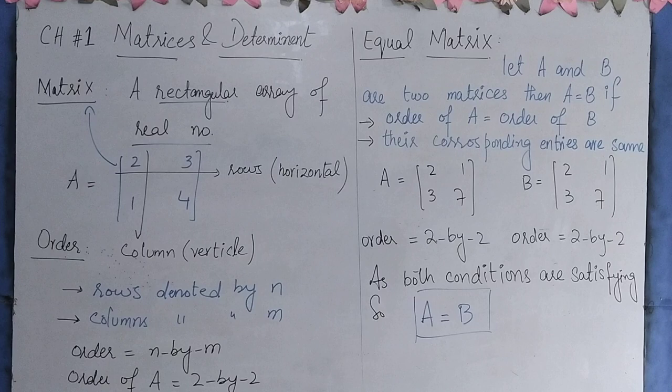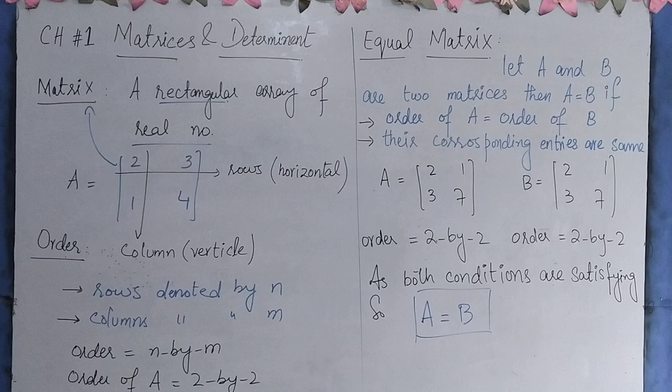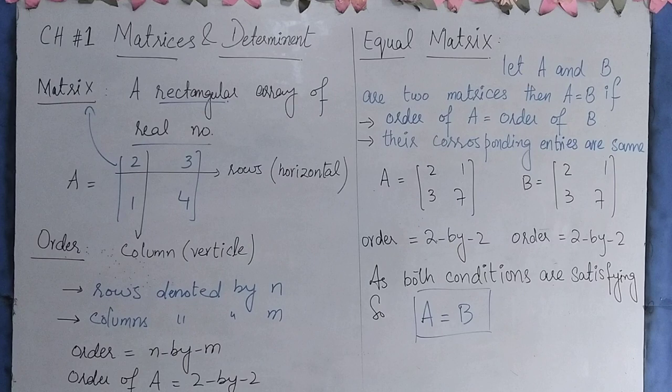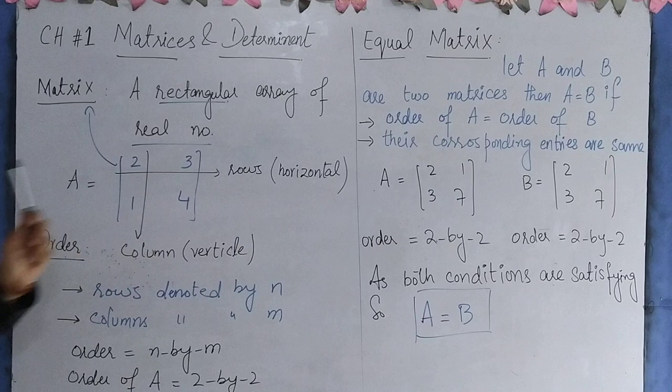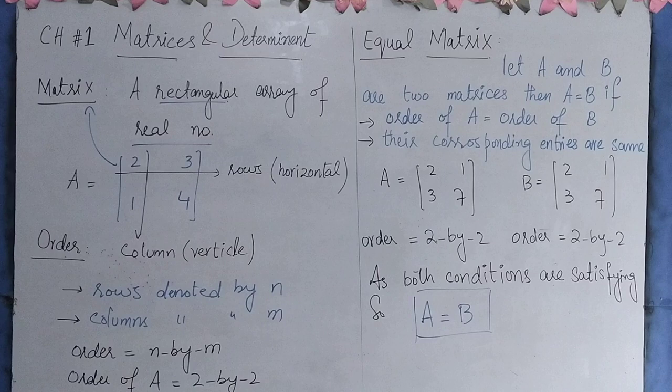Second one is real numbers. You have studied real numbers, natural numbers, whole numbers, and we have combined them to form real numbers. Now, if you have real numbers in specific order, then you have a rectangular array. If you have a specific order in your numbers, that forms a matrix. So this is the basic definition of a matrix.